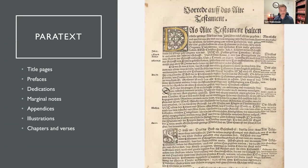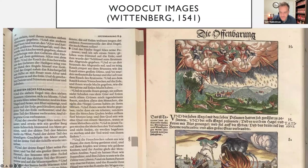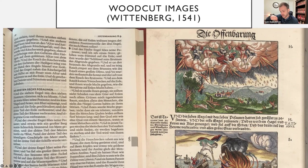Chapters and verses are paratextual elements of scripture that were added later to guide organization of the material. One of the most interesting paratextual elements of Luther Bibles are woodcut images. Woodcut is how they're made: a block of wood was carved, ink was put on it, and then it was pressed on the page. The carved elements were the negative spaces where the ink did not soak.